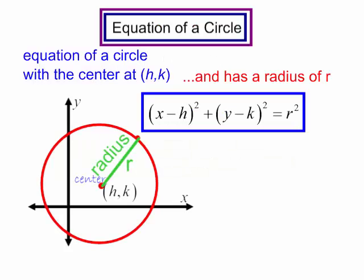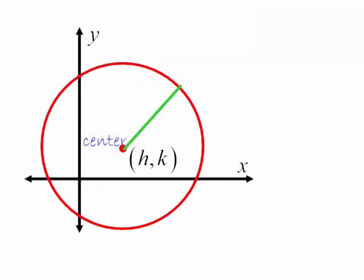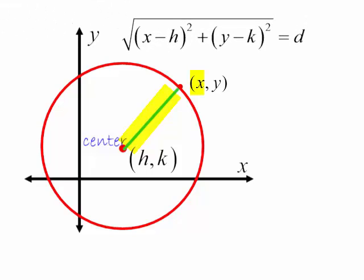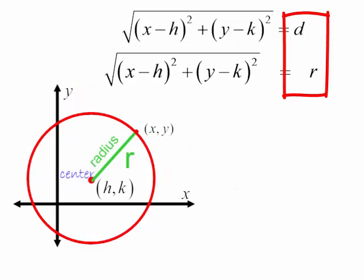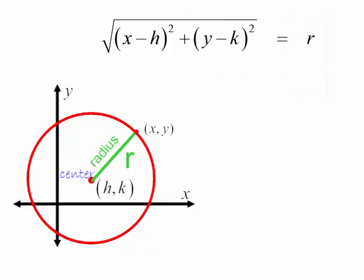So now let's get back to the equation of our circle. I have a circle and the center is at the point (h, k). I have a point on that circle that we will call (x, y). The distance between these two points will be the square root of x minus h, in parentheses, squared, plus y minus k, in parentheses, squared. But we know that the distance from the center of our circle to a point on the circle is the radius, r. So I will replace d with r for the radius.